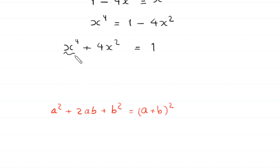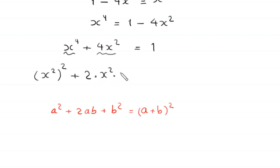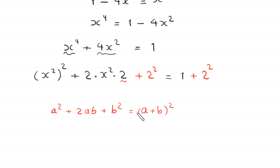We write x⁴ as (x²)², and 4x² as 2 times x² times 2. To complete the perfect square, we add 2² = 4 to both sides. By the algebraic identity, the left-hand side becomes (x² + 2)², equal to 1 + 4 = 5.